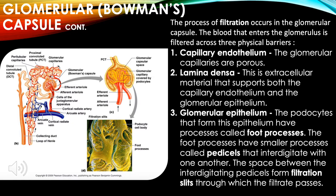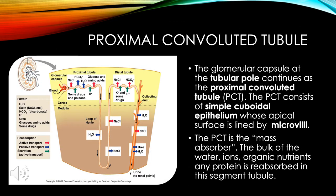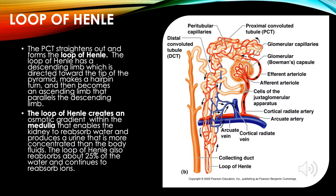The space between the interdigitating pedicels forms filtration slits through which the filtrate passes. The glomerular capsule continues at the tubular pole as the proximal convoluted tubule (PCT). The PCT consists of simple cuboidal epithelium whose apical surface is lined by microvilli. The PCT is the mass absorber — the bulk of water, ions, organic nutrients, and any protein is reabsorbed in this tubule.